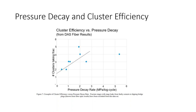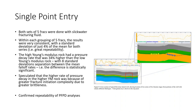The paper also gave some insight on single point entry and validating the methodology of post-fracture pressure decay. They had two sets of five fracks done with slick water treatment. The results of the five fracks as far as post-fracture pressure decay was pretty consistent — a standard deviation of just 4% of the mean. A high Young's modulus rock had a pressure decay rate that was 34% higher than in the low Young's modulus frack, with eight standard deviations of separation. The speculation is that there's a higher rate of pressure decay in the higher Young's modulus rock because of greater fracture initiation complexity due to greater brittleness. This single point entry work confirmed the repeatability of the PFPD analysis.